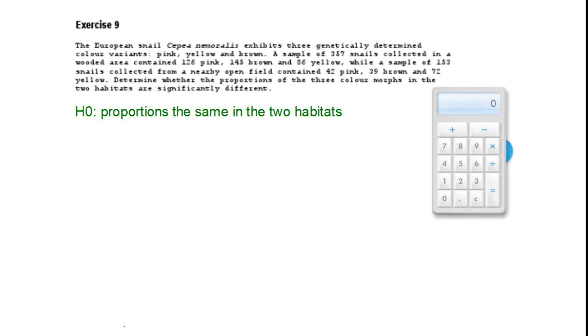In tutorial 6 exercise 9, we have samples of snails from a wooded area and from an open field area. And we have to test whether the proportions of the three color patterns are the same in the two habitats. So that's testing this null hypothesis here.